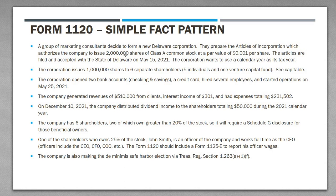Let's run through the fact pattern in its entirety. We have a group of marketing consultants forming a new Delaware corporate entity. They prepare articles of incorporation authorizing 2 million shares of Class A common stock at a par value of $0.001 per share — no preferred stock, no additional classes. The articles are filed and accepted with the state of Delaware on May 15th, 2021, which is the incorporation date. The company uses the calendar year as its tax year, which is the default. Corporations can choose a different fiscal year, such as June 30 or September 30.